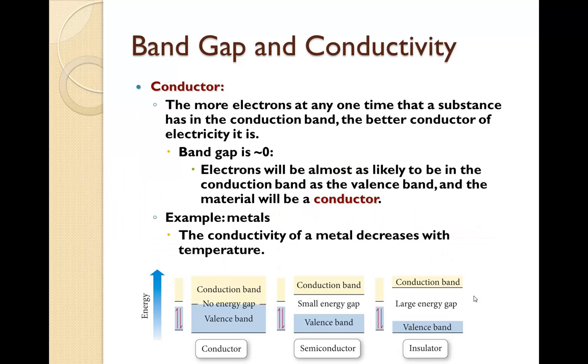In a conductor, the more electrons at any one time that a substance has in the conduction band, the better a conductor of electricity it is. If the band gap is approximately zero, electrons will be almost as likely to be in the conduction band as in the valence band, and the material will be a conductor. For example, metals. The conductivity of metal decreases with temperature.